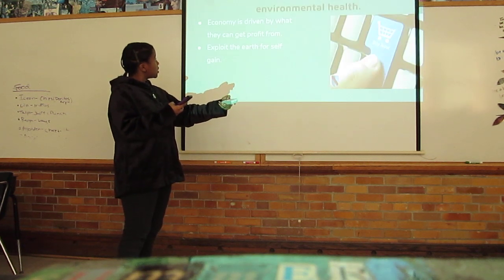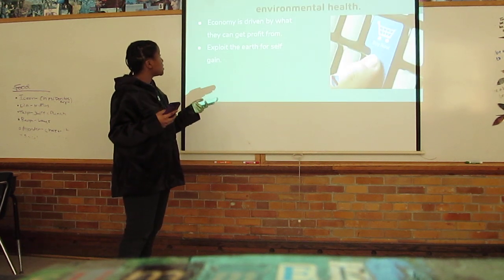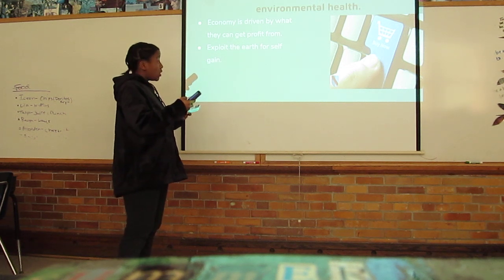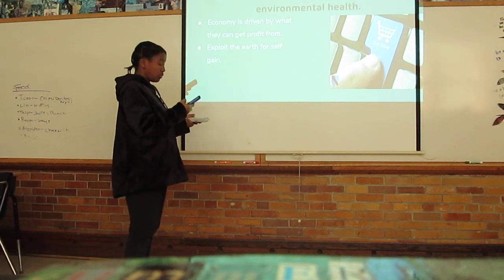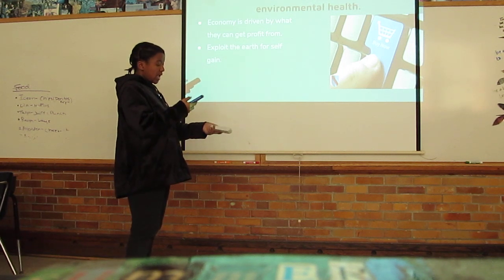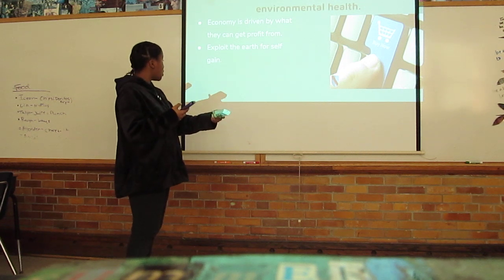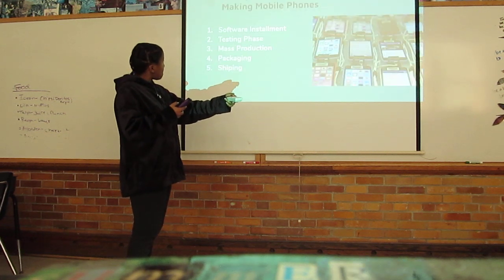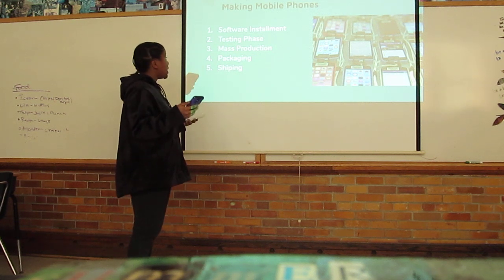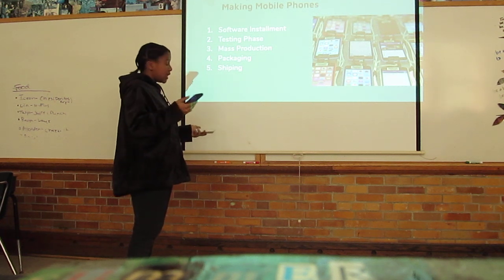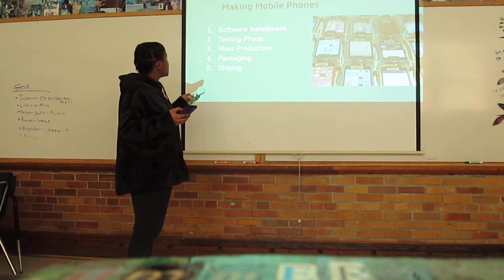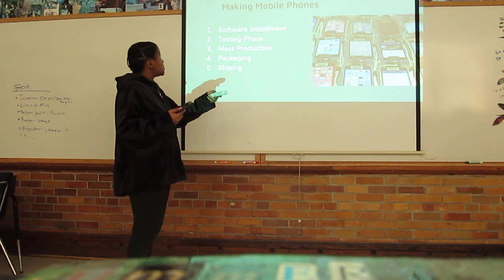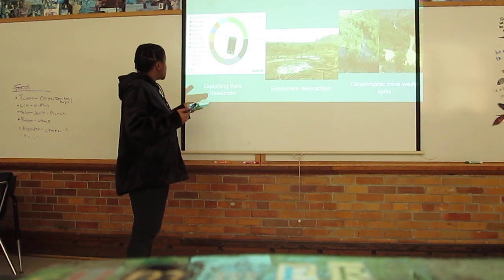The third way is that consumer sovereignty overuses environmental health. The economy is driven by profit, and producers will exploit the earth to get that profit. I'm going to show an example with mobile phones — they are very popular, used by everyone, and make a lot of money. The process includes software installation, testing, mass production, packaging, and shipping. What they don't tell you is that we have to exploit our resources to make them.